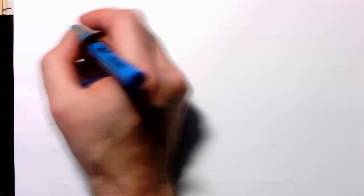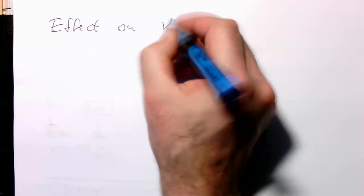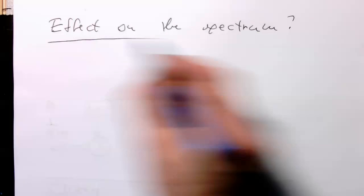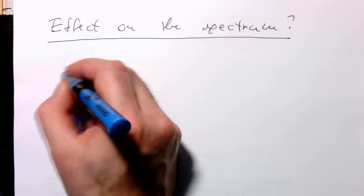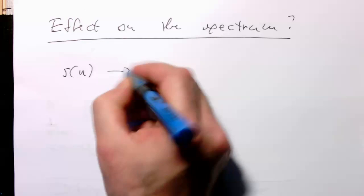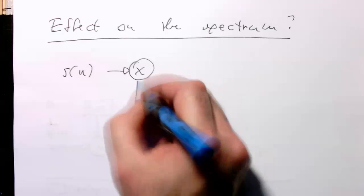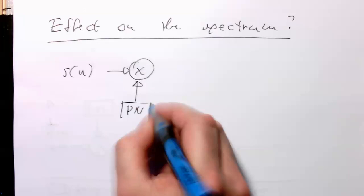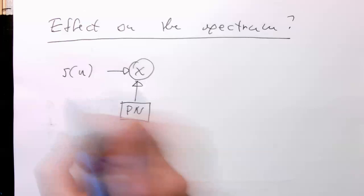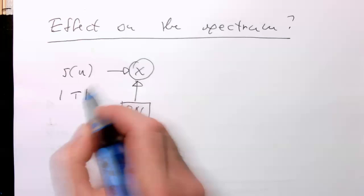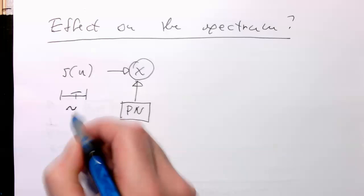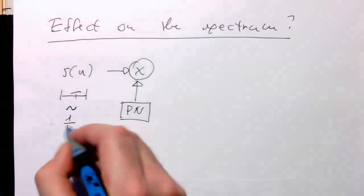So what is the effect on the spectrum? So remember, the s of n, that's multiplied with our pseudorandom number sequence here. And so we know that if we have a symbol duration t here, so that's one symbol, that's the s of n. This is proportional to 1 over b, so our bandwidth.